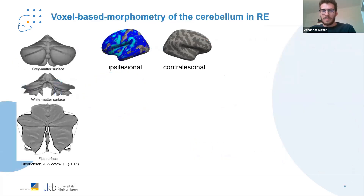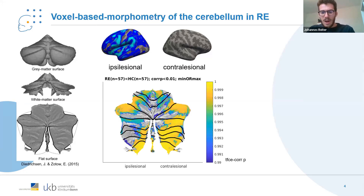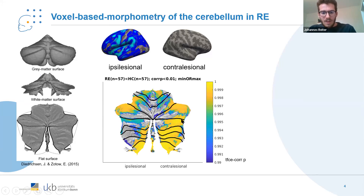To quantify this observation, we performed a voxel-based morphometry study comparing Rasmussen's patients and controls. As expected, on the contralesional hemisphere of the cerebellum there was a vast amount of atrophy, as shown here on the slide. But there was also some atrophy on the ipsilesional side of the cerebellum.